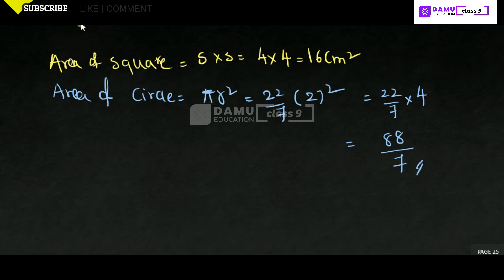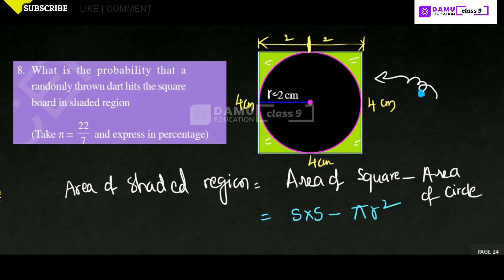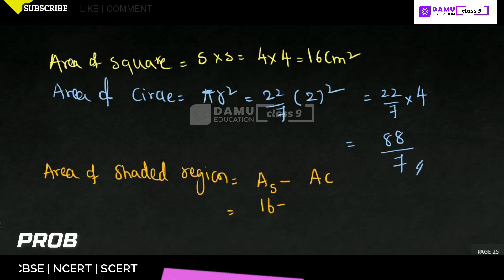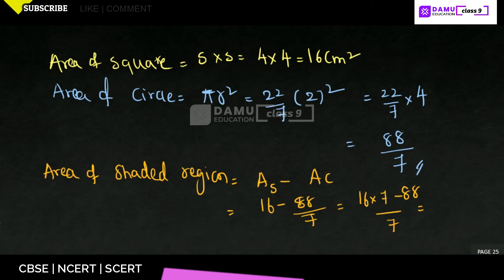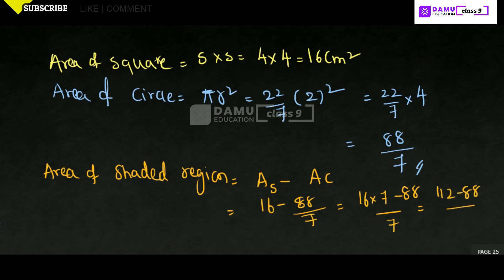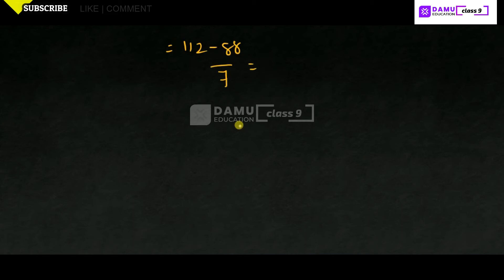So, area of shaded region will be equal to area of square minus area of circle. Area of square is 16, and area of circle is 88 by 7. Taking LCM: 16 becomes 112 by 7, so we get 112 minus 88 by 7, which equals 24 by 7.